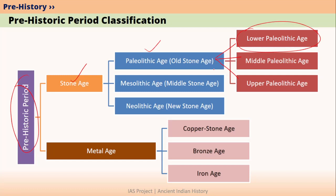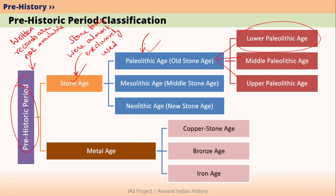Let's quickly see the definitions of these terms. Prehistoric Period was such part of the past where written records were not available. Stone Age is such part of prehistory where stone tools were exclusively used. Paleolithic Age was such part of the Stone Age where the climate was of the Great Ice Age — that is the Pleistocene Epoch — and there was no agriculture; people were mainly hunters and gatherers.